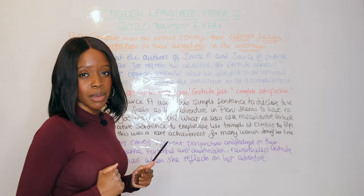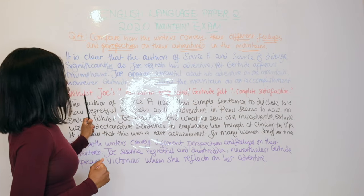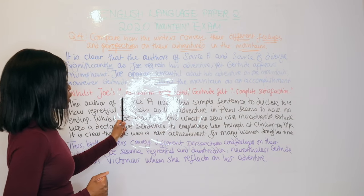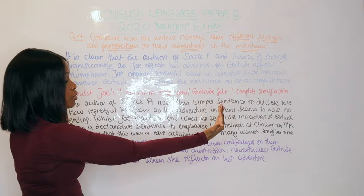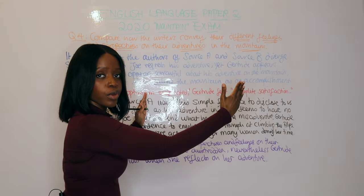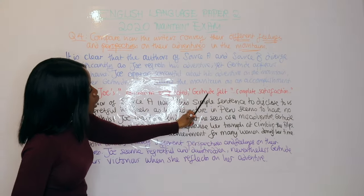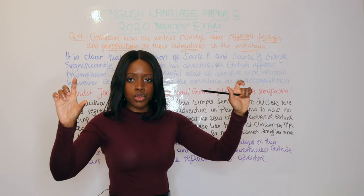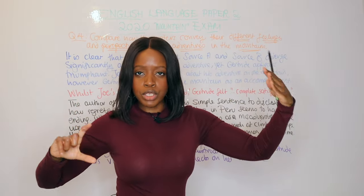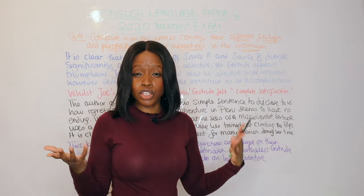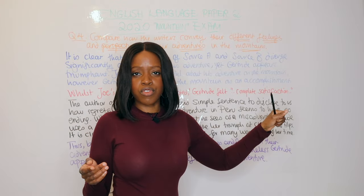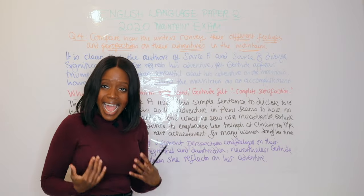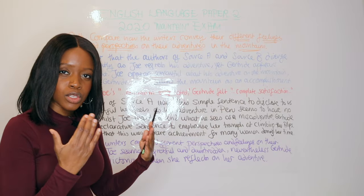Now for the Evidence, I juxtapose and compare both source A and source B: 'Whilst Joe's...optimism evaporated, Gertrude felt...complete satisfaction.' I've used ellipses to show I'm referring to the wider sentence while quoting only the specific part. That gives me two pieces of evidence — one from each source — without wasting time writing out reams of text from both sources.